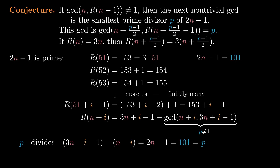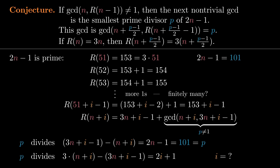Remember this assumes we don't see 1s forever. Must there eventually be a GCD that isn't 1? If we can figure out what i is, this will tell us where this GCD appears and therefore that it does appear. We cancelled the i's from the two arguments of the GCD to get a number depending only on n. Similarly, if we multiply n plus i by 3, then subtract 3n plus i minus 1, the two instances of 3n cancel, leaving 2i plus 1. The smallest possible i that might work is when 2i plus 1 equals P, making i equal to P minus 1 over 2, which agrees with the second part of our conjecture. In this example, i would be 50.